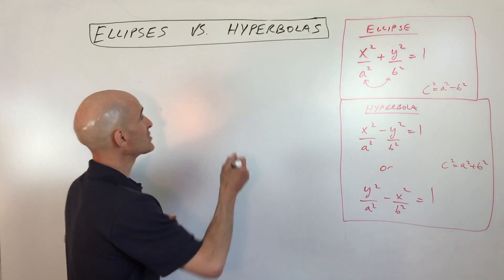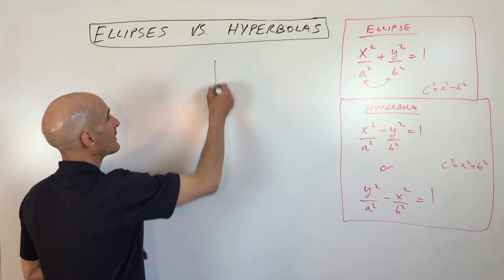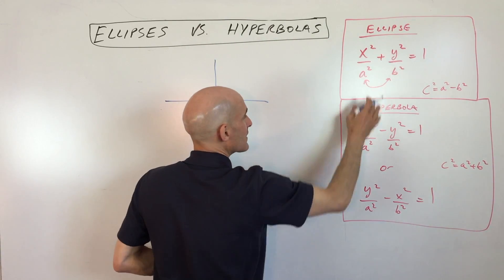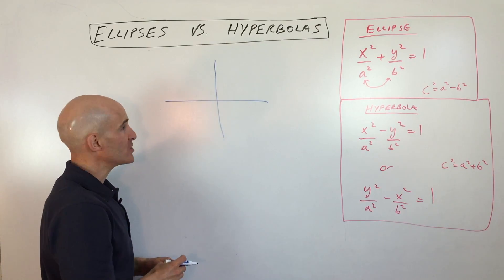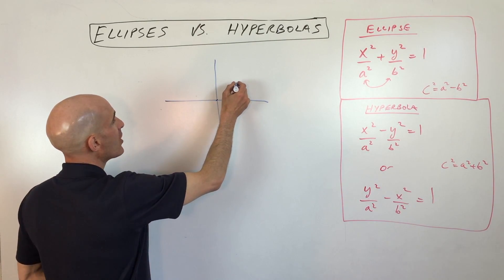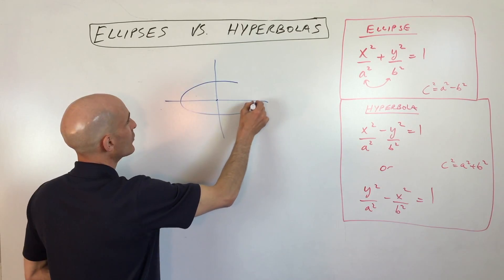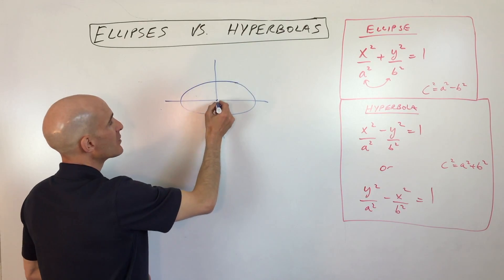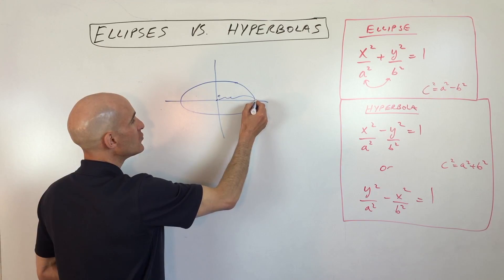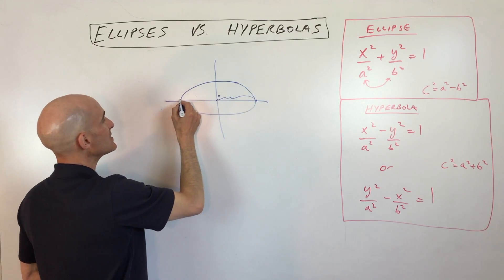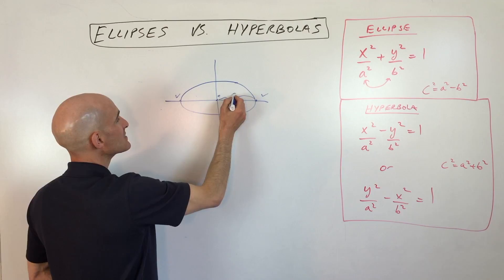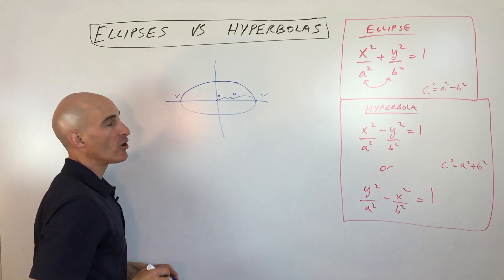Let's look at the anatomy of an ellipse. These ones I've drawn here are centered about the origin, so the center is right at the origin. If I draw an ellipse like this, here's the center. The distance from the center to the vertices — that distance is called a.